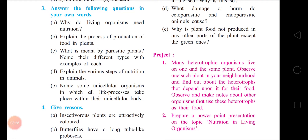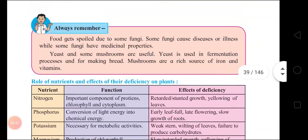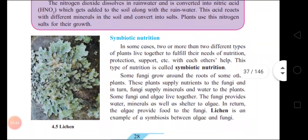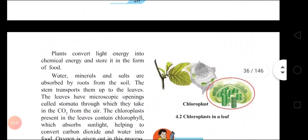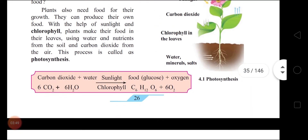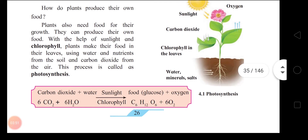Third point: oxygen is liberated by the plant during the process. Fourth point: the chemical reaction of photosynthesis – children, you have to write this. Page number 26: CO2 plus H2O.